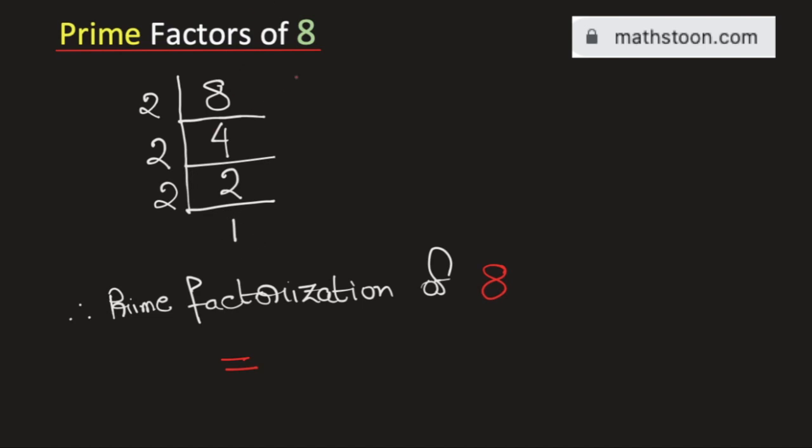And the prime factorization of 8 will be equal to the product of the numbers on the left hand side. So, 8 can be written as 2 times 2 times 2. And this is our prime factorization of 8. And this is our final answer.